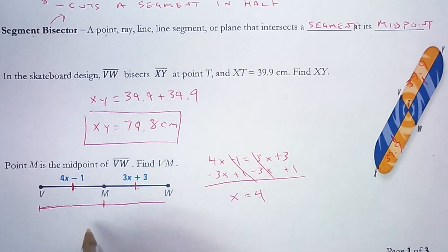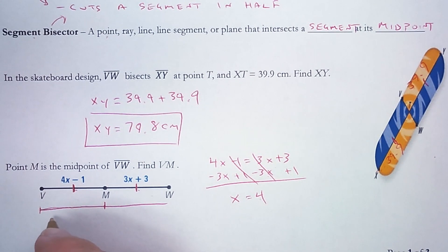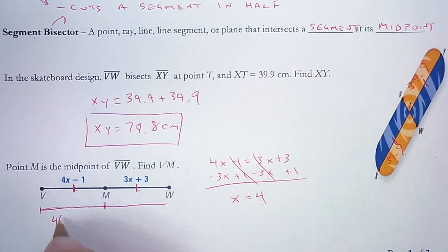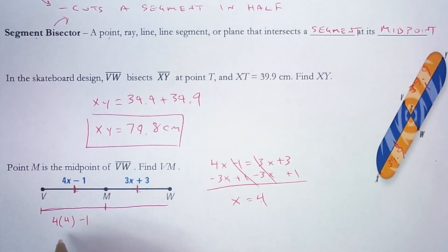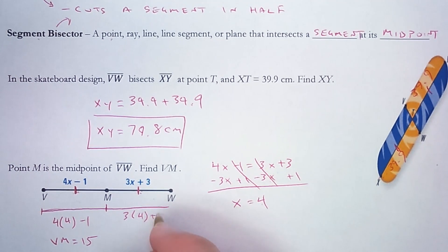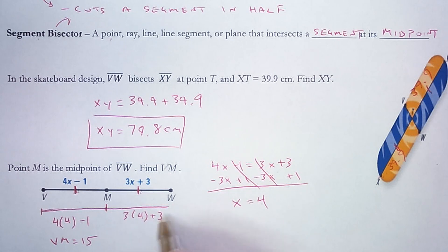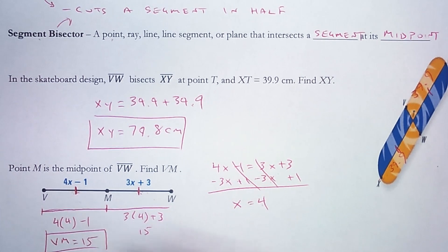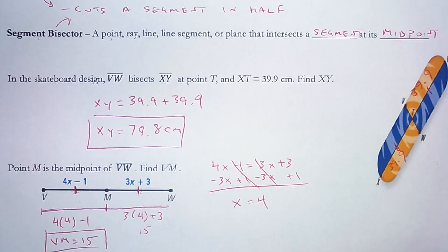So I will plug in my value of x right here. So 4 times 4 minus 1. That's 16 minus 1. So VM has a length of 15. Now before I put a box around it, here's an easy way to check. These two should be the same. So I'll put that 4 right here for x. 3 times 4 plus 3. That's 12 plus 3. That is also 15. They are the same. That's good because this is a midpoint. So these should be congruent. So VM equals 15 would be correct.